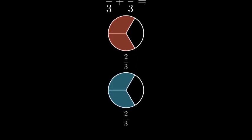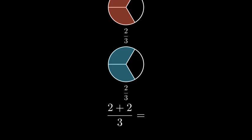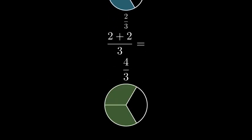When we add fractions with the same denominator, we can add the numerators and keep the same denominator. In this case, we add two plus two in the numerator, and keep three as our denominator. Two plus two equals four, so we get four-thirds.